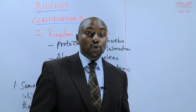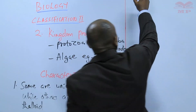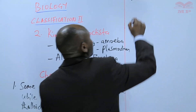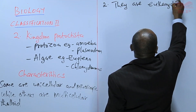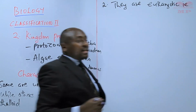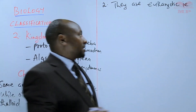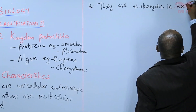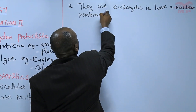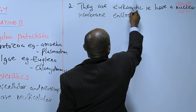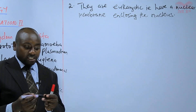The second characteristic of kingdom Protoktista is that they are eukaryotic. Eukaryotic means that they have a nuclear membrane enclosing the nucleus. These organisms have a nuclear membrane closing the nucleus — that is what the word eukaryotic means.